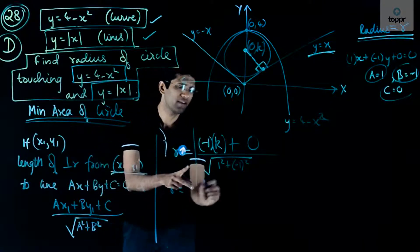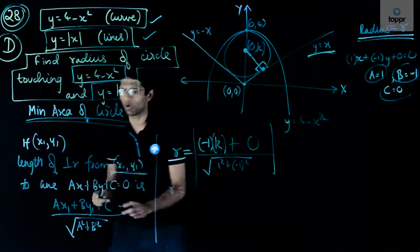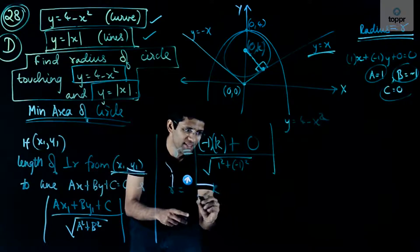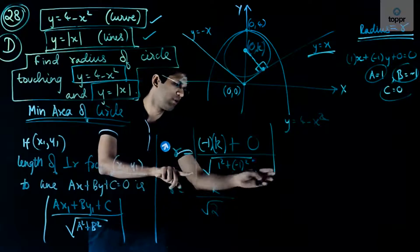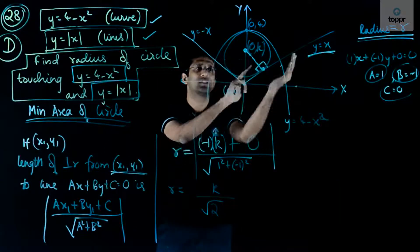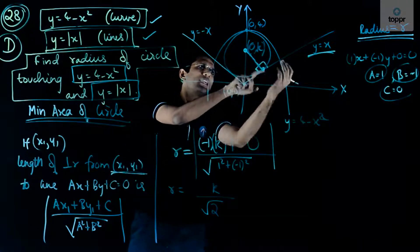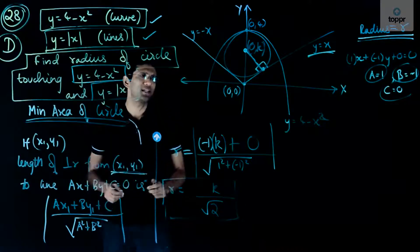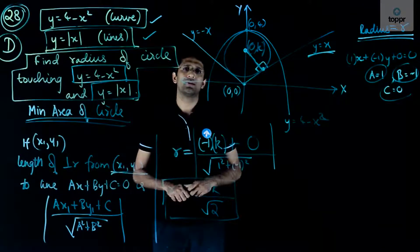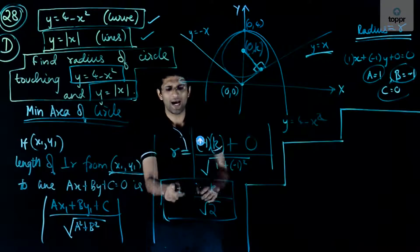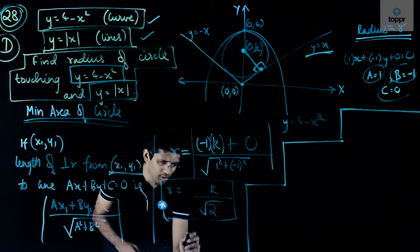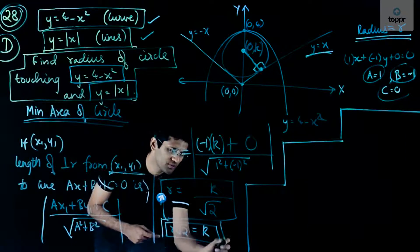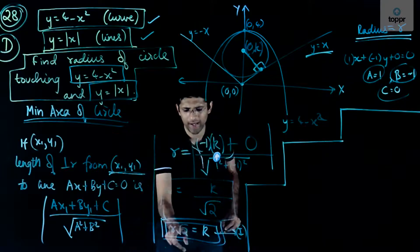Taking the modulus, r = |−k| / √2 = k / √2, since we consider positive k by symmetry. Rearranging gives k = r√2. This is Equation 1, which we preserve for later use.